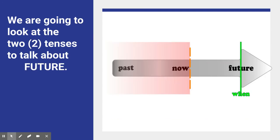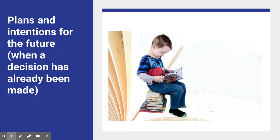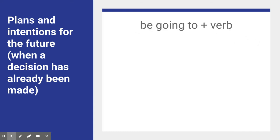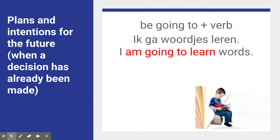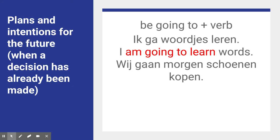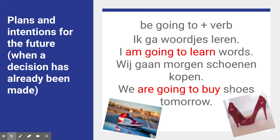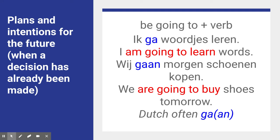So we're going to do two, and I will explain them to you. Suppose you have plans, or you have the intention to do something in the future — you have made a decision. Then you use 'be going to'. So like the boy said 'ik ga woordjes leren' — you can't say 'I go learn words', you have to say 'I am going to learn words'. Or 'we gaan morgen schoenen kopen' — that is a decision. Then you say 'we are going to buy shoes tomorrow', not 'we go buy shoes tomorrow'. In Dutch, very often you see 'ga', 'gaan', or 'gaat'. Try to remember this.